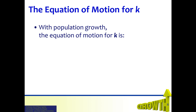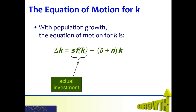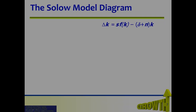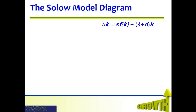We now have a new equation of motion for k. With population growth, the equation of motion for k is: delta k equals S times f(k), which is actual investment, minus (delta plus n) times k, which is break-even investment. Actual investment and break-even investment are in per-worker magnitudes. Investment must be greater than (delta plus n) times k for k to grow — actual investment must exceed break-even investment for the economy to accumulate capital. Where investment equals break-even investment determines the steady-state level of capital per worker.